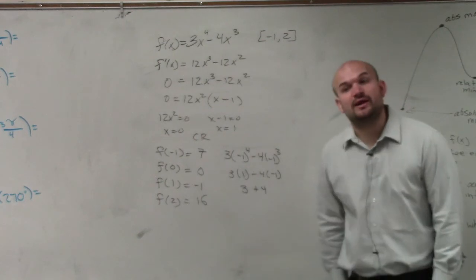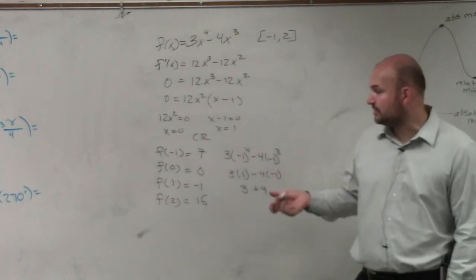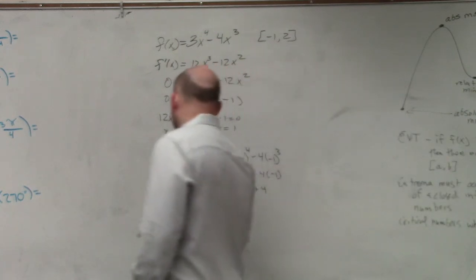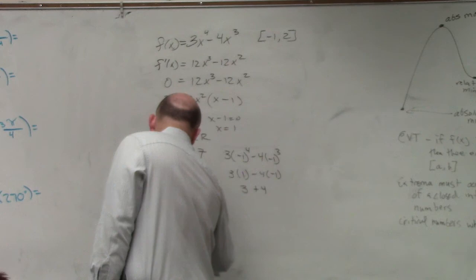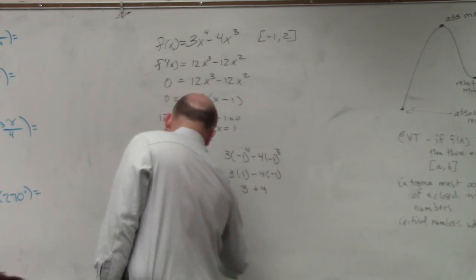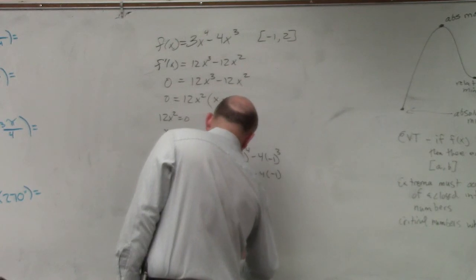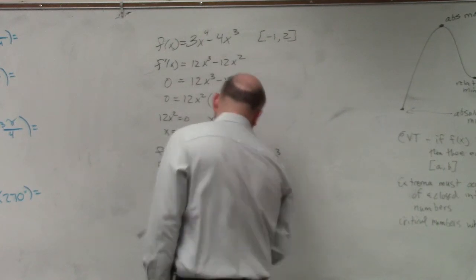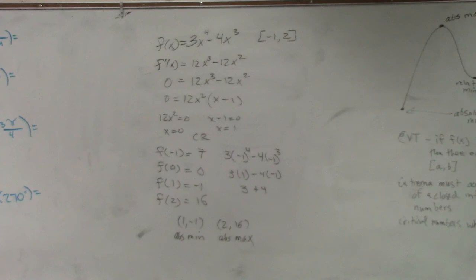So therefore, another way to write our absolute max and our mins, ladies and gentlemen, is we can write them as our coordinate points. You guys can see that my coordinate point 1 comma negative 1 is my absolute min, and my point 2 comma 16 is my absolute max. So you can write the value as your max or min, or you can also write them as coordinate points.